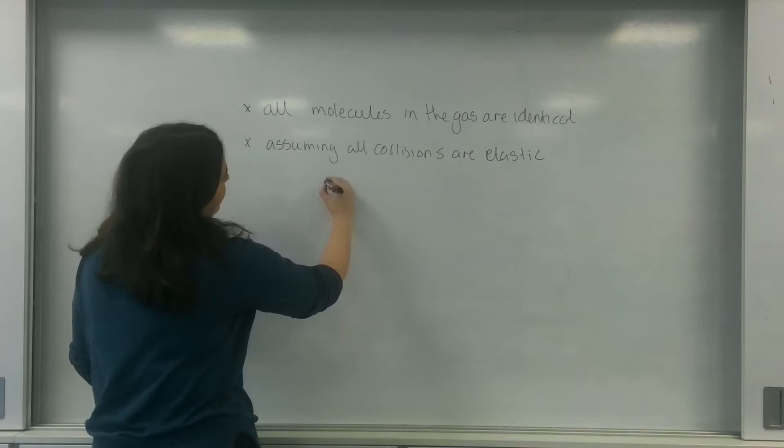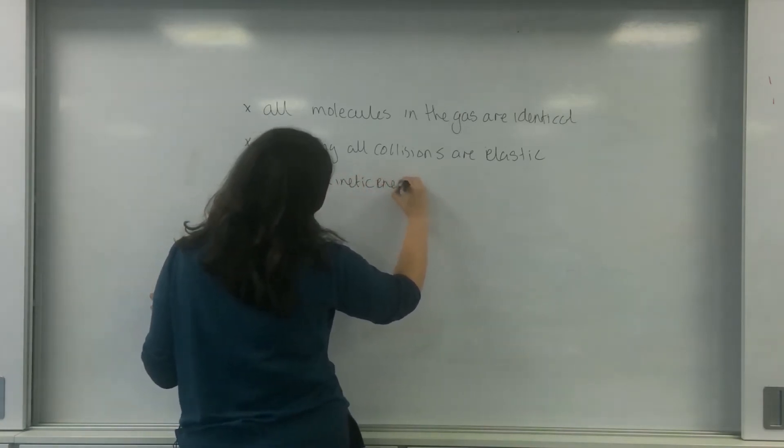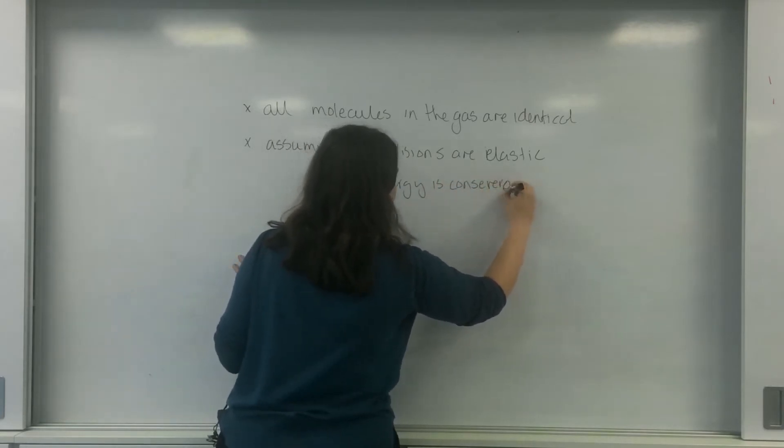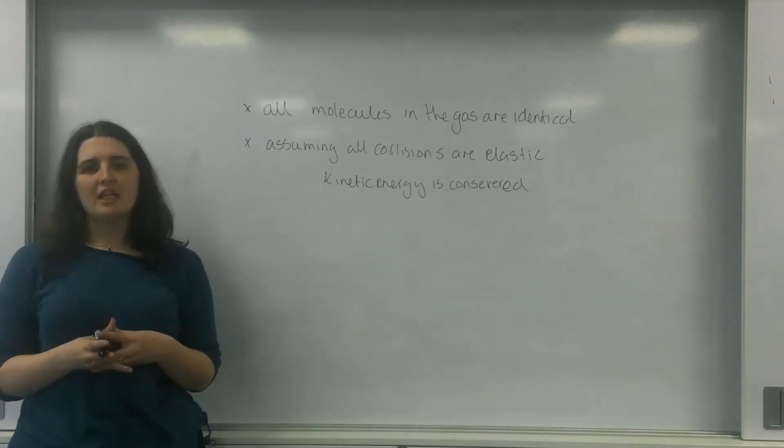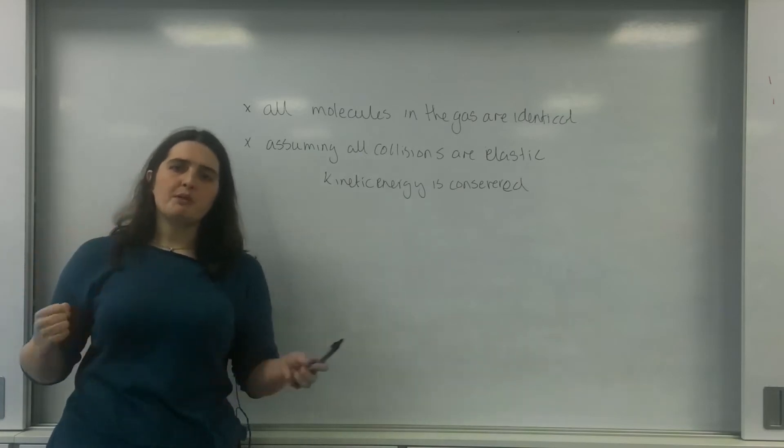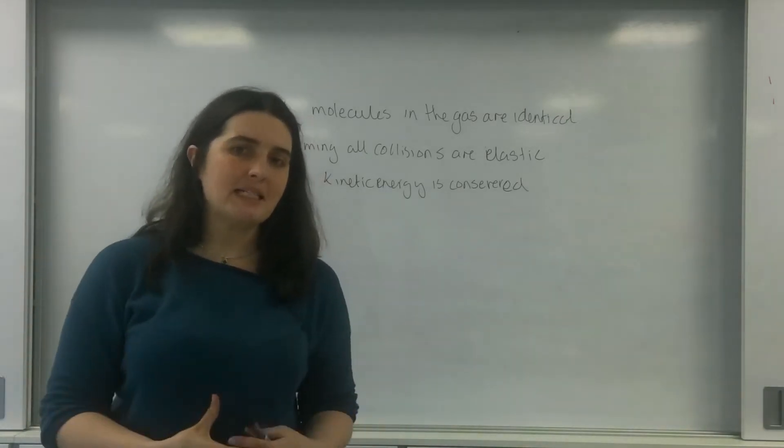If you want to go back to first year mechanics and have a look at momentum, an elastic collision is one where kinetic energy is conserved. So you're assuming when something bounces off something and rebounds, it will rebound at the same speed but in a different direction.